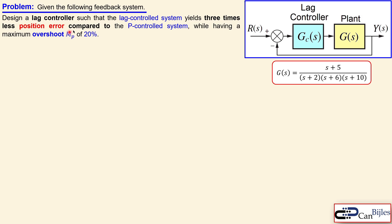We have the following problem: a feedback system is given with a lag controller in cascade with the plant. The plant transfer function G is a third order system and it also has a zero at minus 5. We would like to design a lag controller such that the lag control system yields three times less position error compared to the P control system, while having a maximum overshoot of 20%.